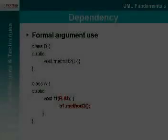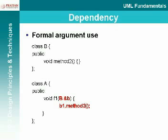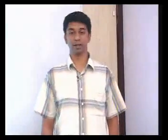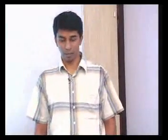The third form of dependency is formal argument use. It is quite possible that methods of a class take other class instances as arguments. In such a case you might still want to include those header files, and you still have dependencies with classes from other files, so you term this as dependency.